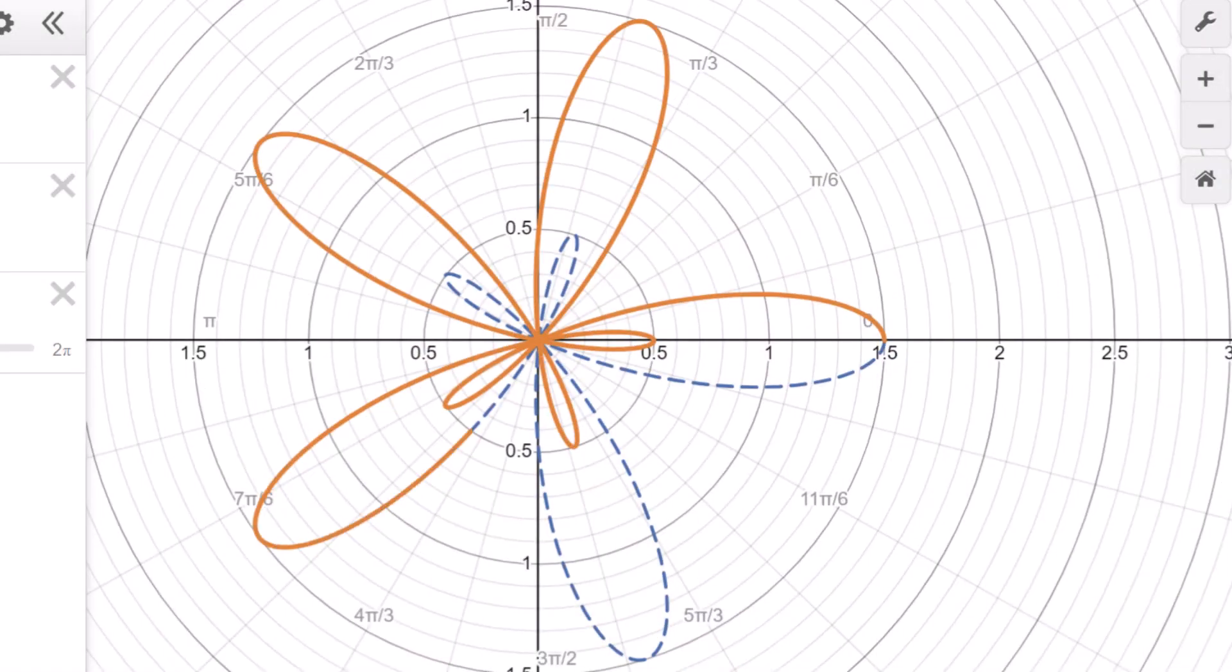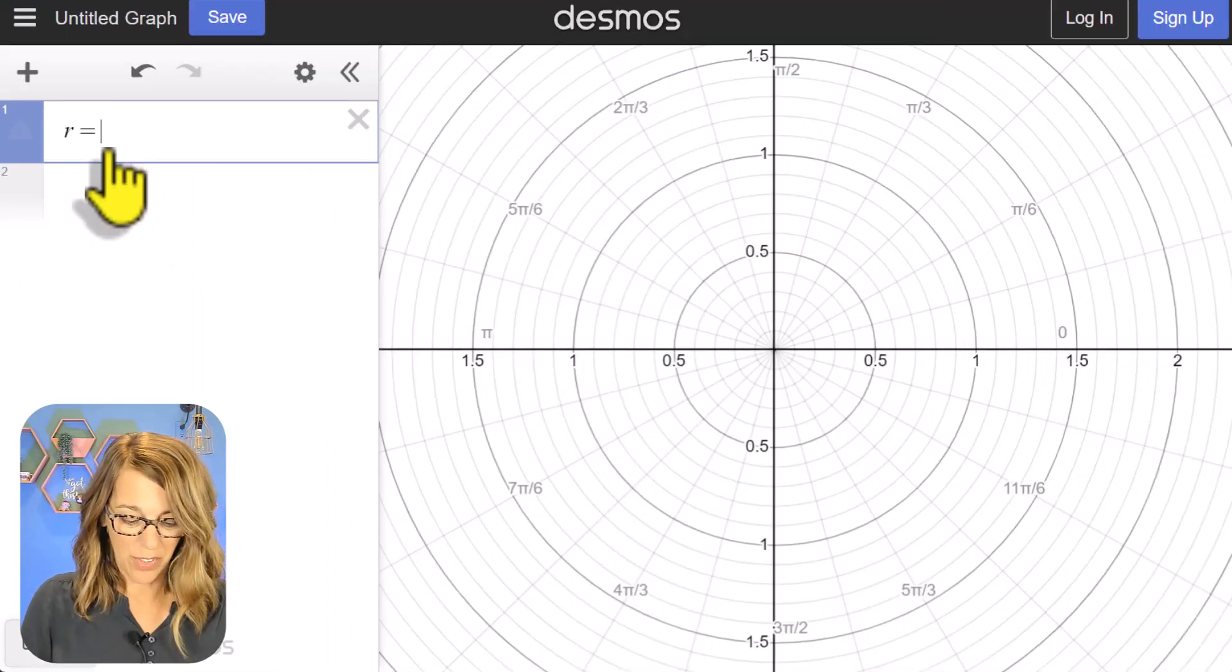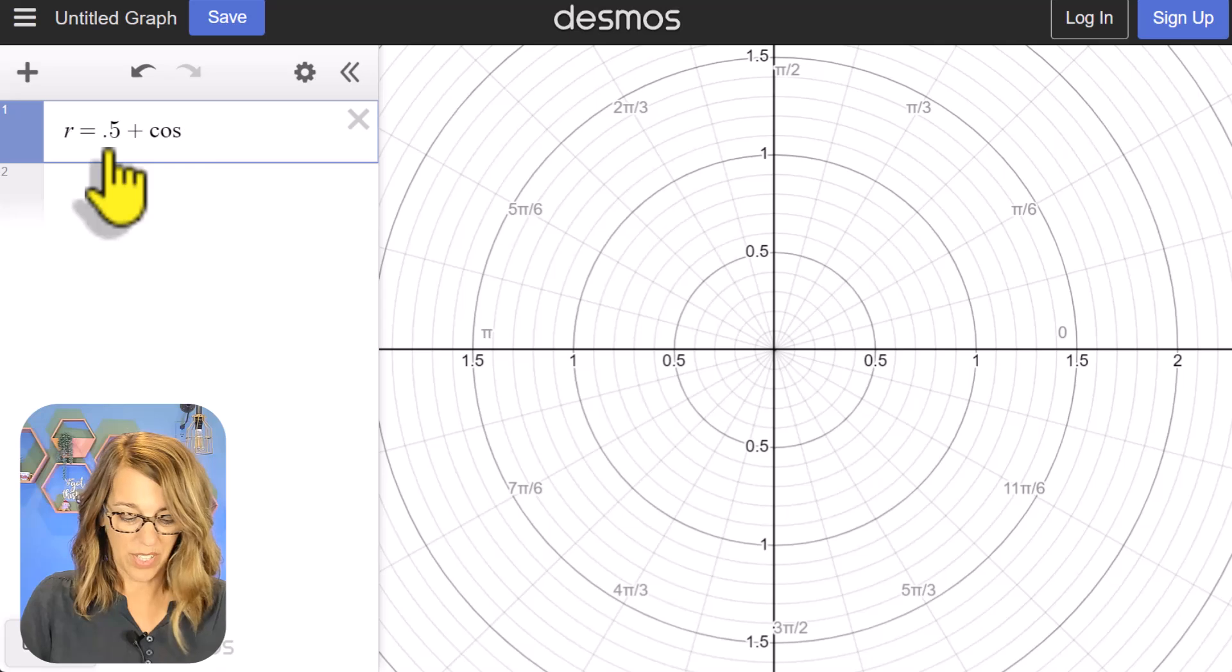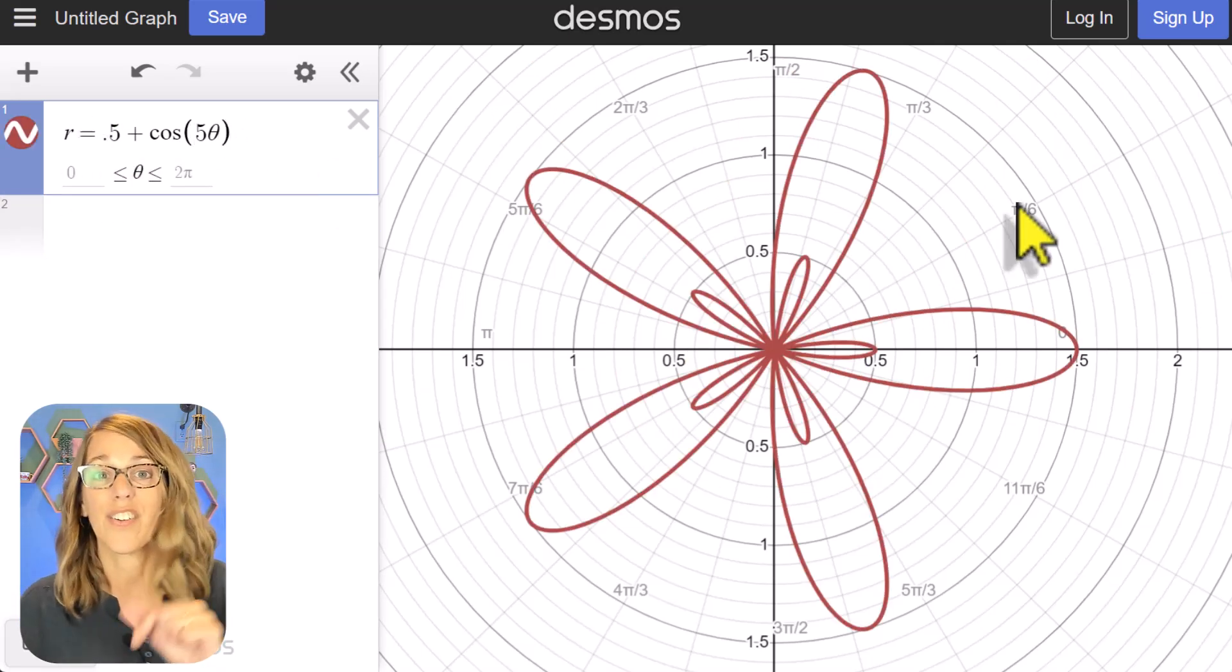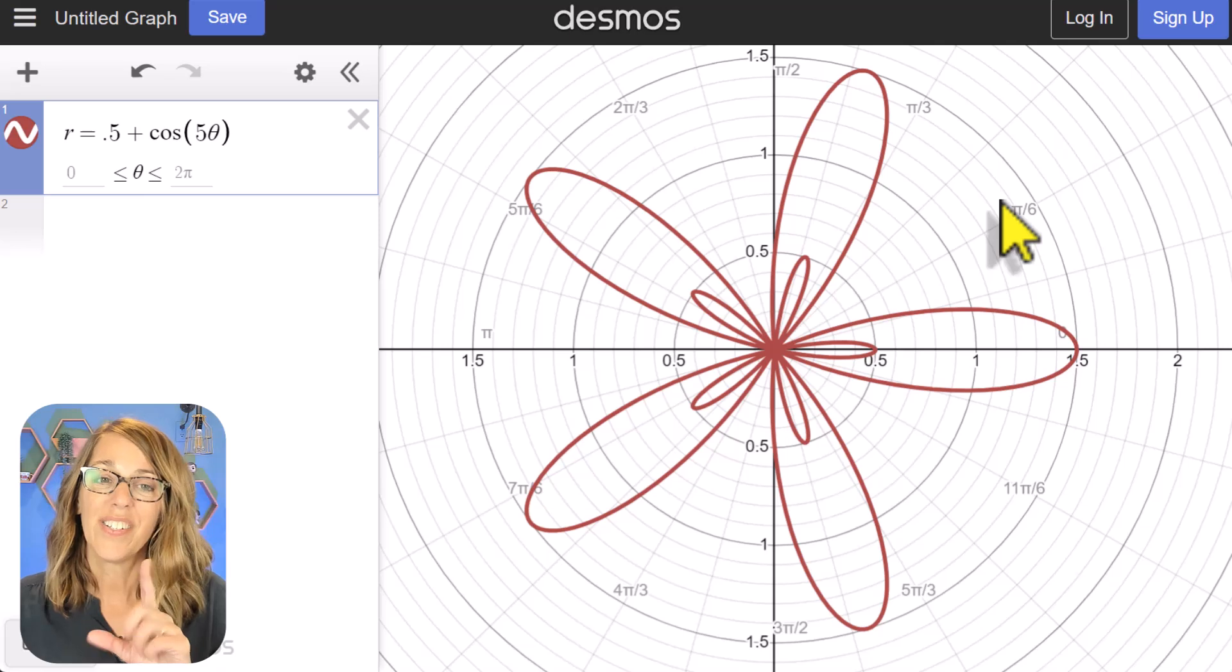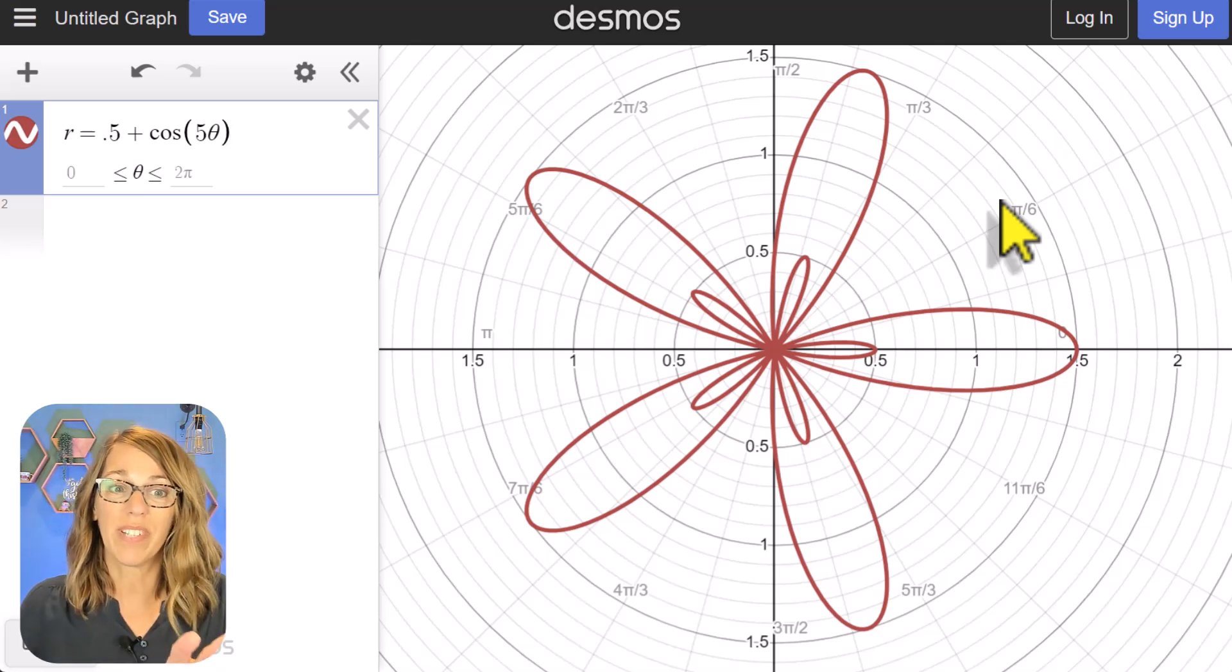The second way of tracing is even better, and we're going to use a rose this time. Let's do r equals 0.5 plus cos(5θ), so we've got several petals, inner and outer petals. To do this, I am going to duplicate this graph.